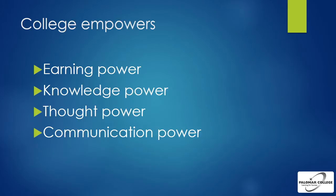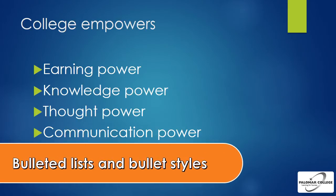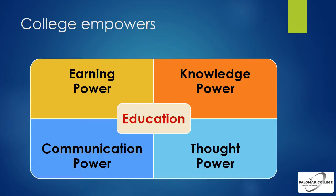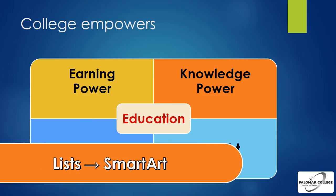On our next slide, we're going to build a bulleted list. For some people, bulleted lists are PowerPoint in its totality — no graphics, nothing but bulleted lists. That's pretty boring, however. So we're going to show you how to change bullet styles, and then we're going to show you how to convert bulleted lists to SmartArt. The matrix SmartArt you see on this slide was based on that previous bulleted list. In the workshop, we'll take that bulleted list, convert it to a list piece of SmartArt, and then later convert that to a matrix piece of SmartArt.